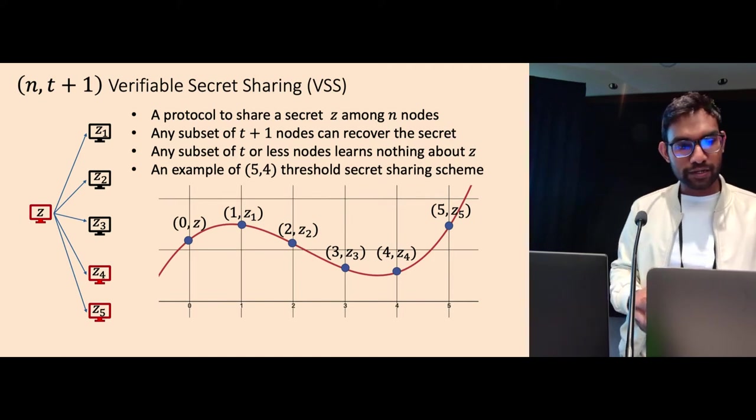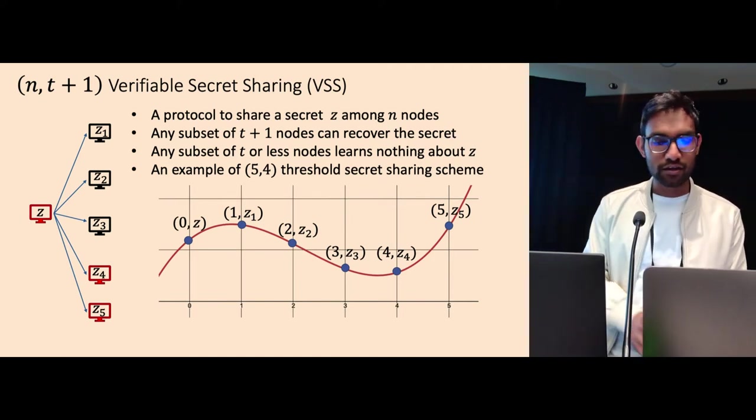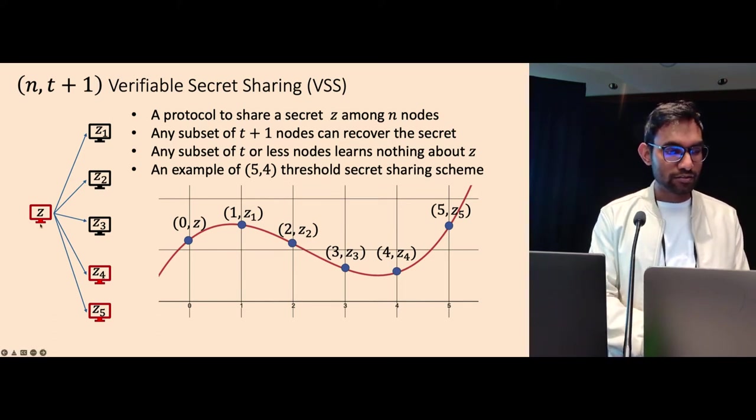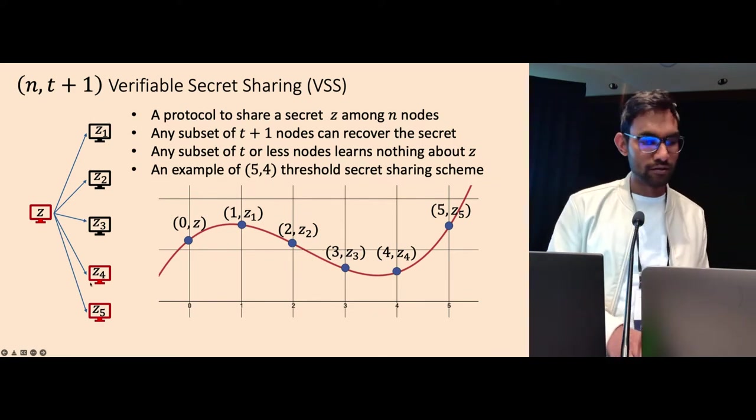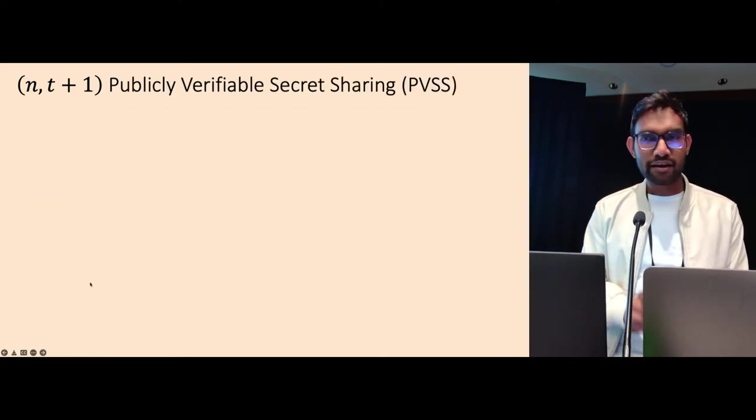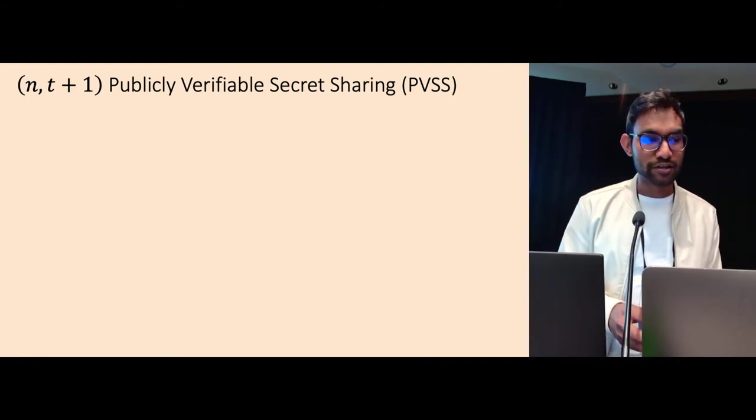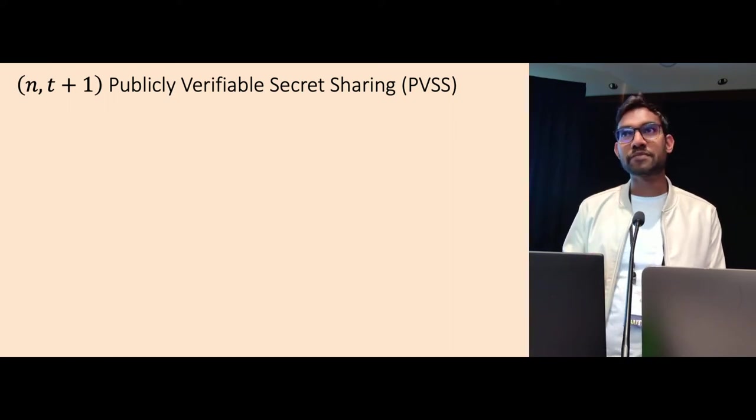So in this paper, we need something stronger, which is known as verifiable secret sharing, where the idea is we want to do threshold secret sharing in a setting where the dealer could be malicious, and also a subset of nodes could be malicious as well. We need slightly stronger primitive, which we call publicly verifiable secret sharing scheme, which is verifiable secret sharing scheme with some extra stuff.